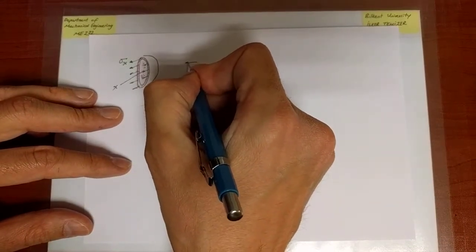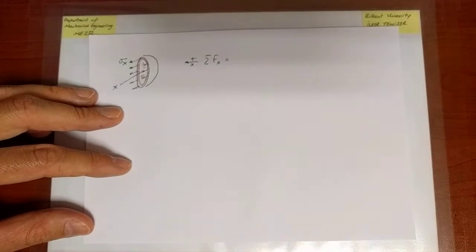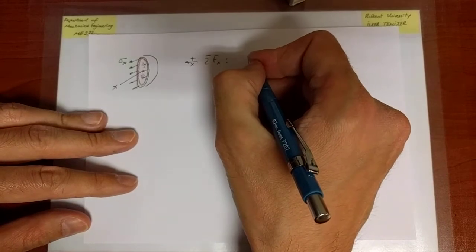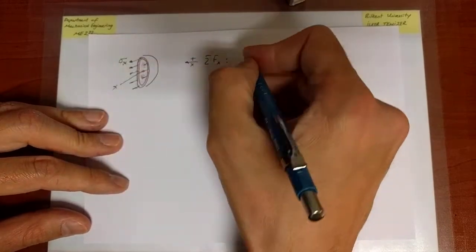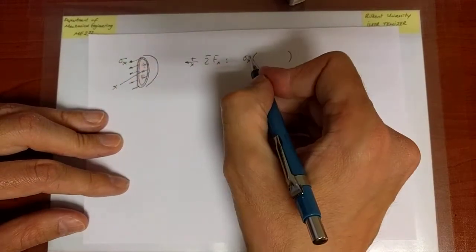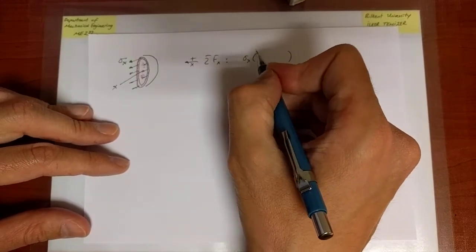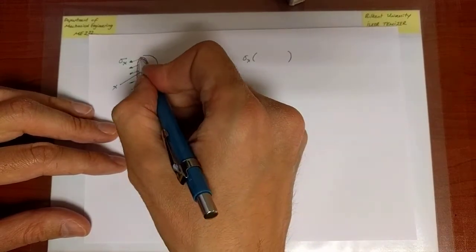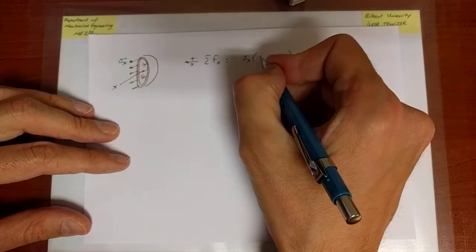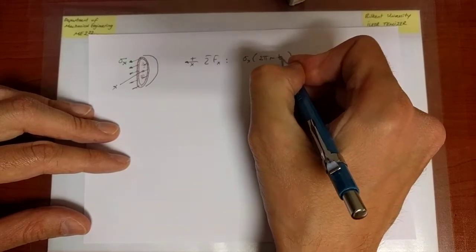The sum of the forces in the x direction needs to be equal to zero. The forces associated with the internal stresses sigma x are distributed over a thin-walled area. I'm assuming that distribution is uniform — that's the thin-walled assumption, just like I did for the tangential stress. So I just need to multiply by the thin-walled area, which is simply the circumference 2πr times the thickness.